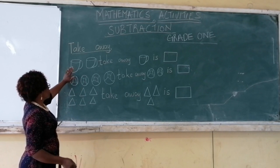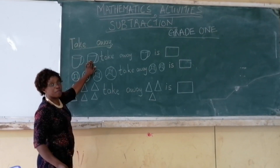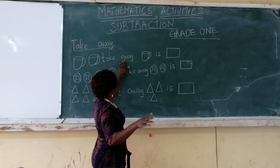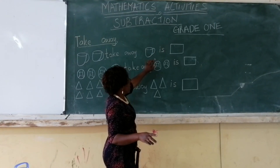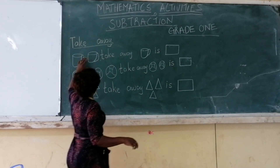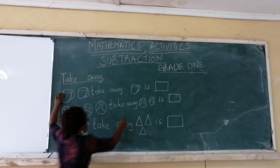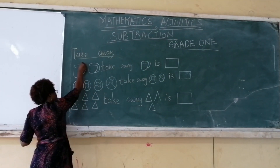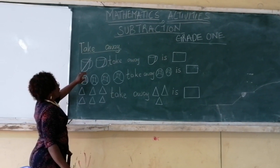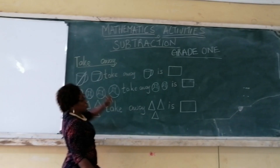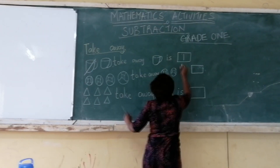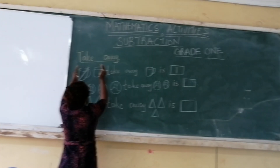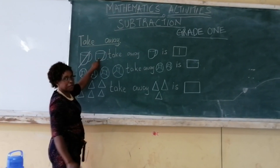This is a picture of a cup. How many cups do we have? We have one, two — we have two cups. Then, we have written take away. So, we are supposed to take away how many cups? Only one cup. We have two cups, we want to take away one. Since we cannot take and hide it, we are going to cancel it. I will cancel one cup. So, how many cups have I been left with? One. So, our answer is one.